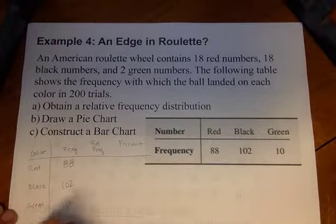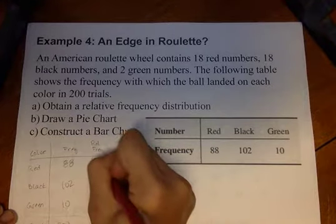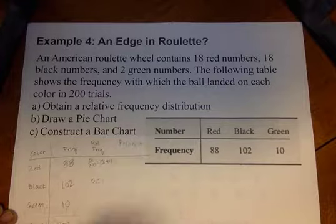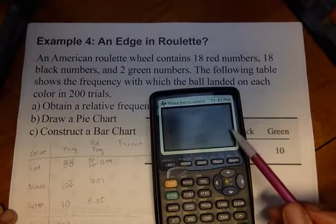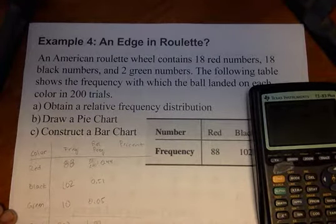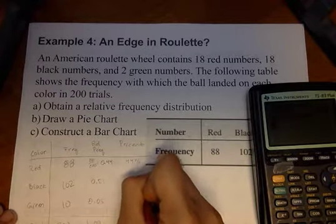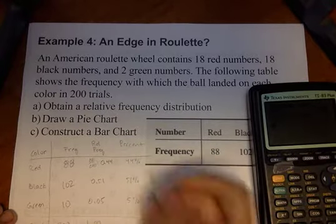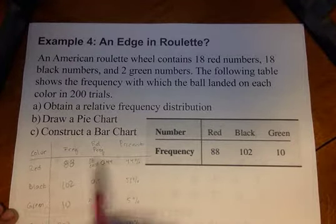Adding up 0.44 plus 0.51 plus 0.05 gives 1 — that's normal. Sometimes it won't be exactly 1 due to rounding, and 0.99 or 1.01 is okay. To convert to percent, multiply by 100: that's 44%, 51%, and 5%. Those should all add up to 100%. So there's our relative frequency distribution with frequency, relative frequency, and percent.